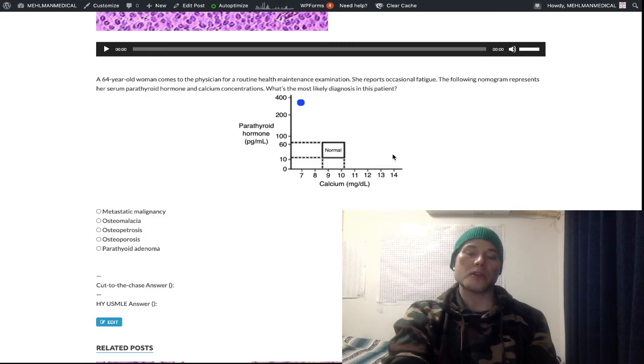So that would cause increased serum calcium, metastatic malignancy, and in turn, your PTH would go down to compensate, right? So PTH would go down. That makes sense. We have more negative feedback. So our dot would be over here, a high calcium, low parathyroid hormone for metastatic malignancy.